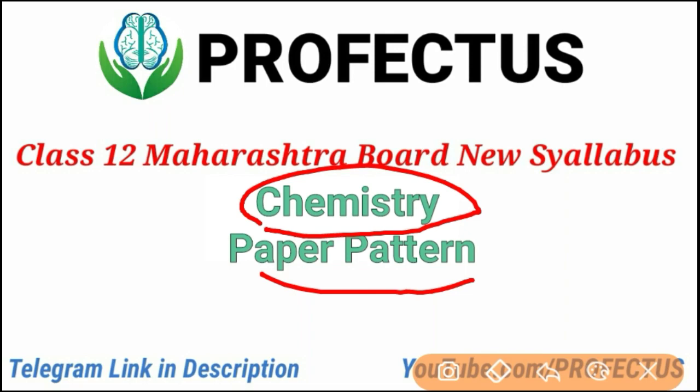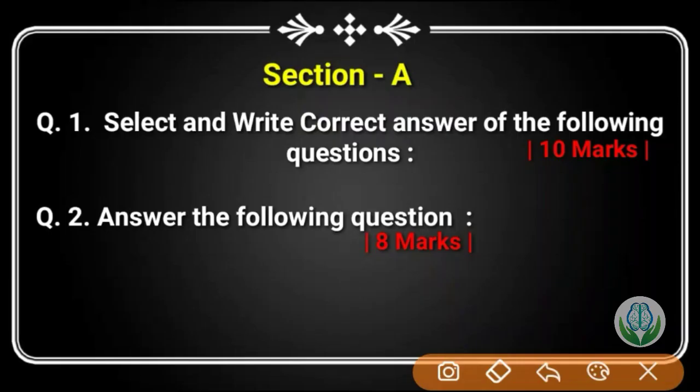So let's start. What is the paper pattern? The Chemistry paper is divided into four sections: Section A, Section B, Section C, and Section D. Section A has Question 1 and Question 2.